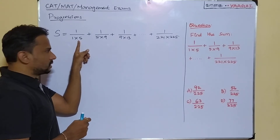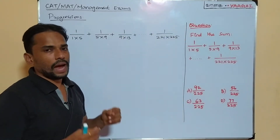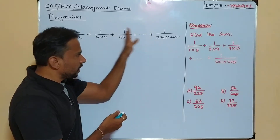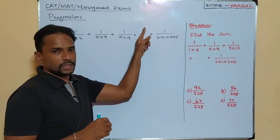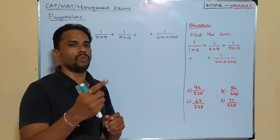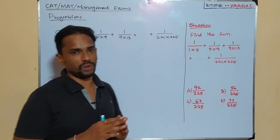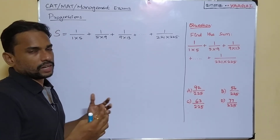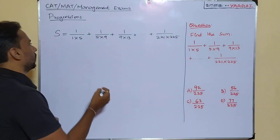The chain continues: 1×5, then 5×9, then 9×13, and the next term would be 1/(13×17), since 13+4=17. By observing this pattern we can predict any term. This structural observation will help us solve the problem in an easy way. Now I'm placing an equal-to sign and proceeding to the next step.